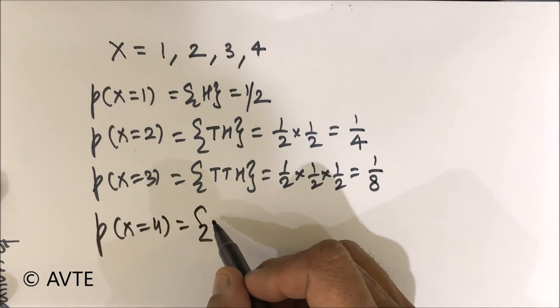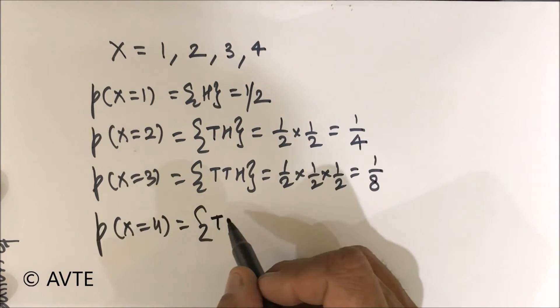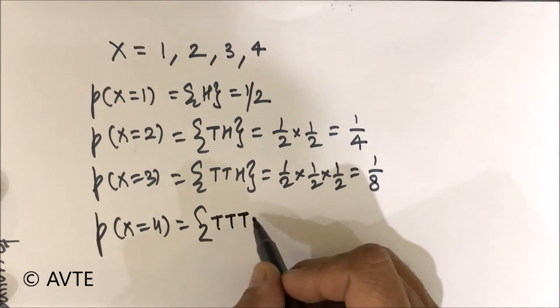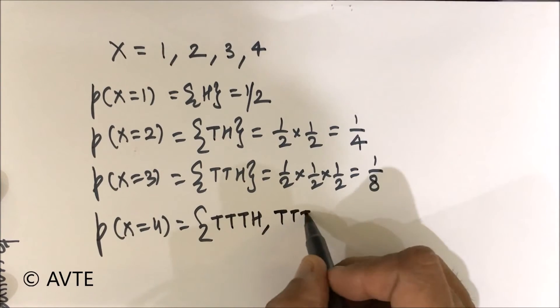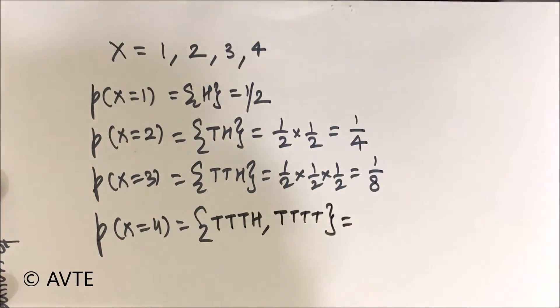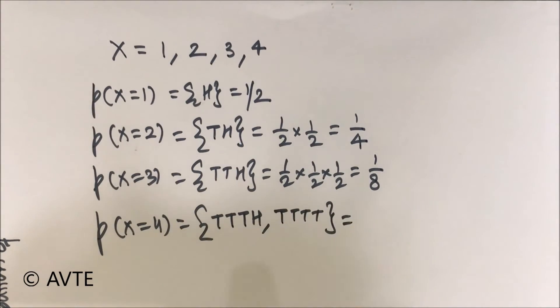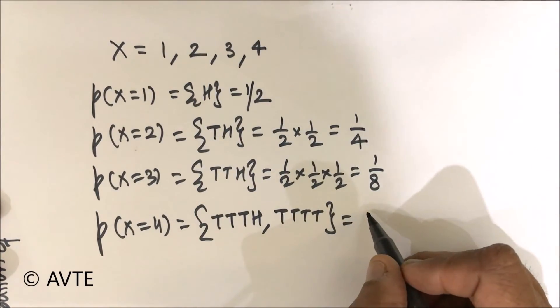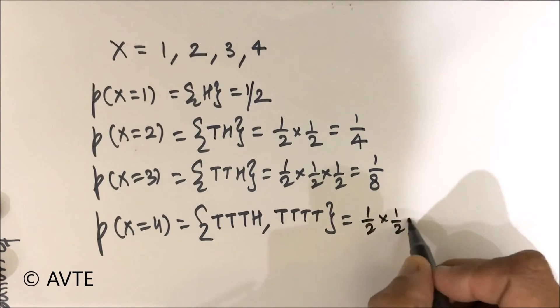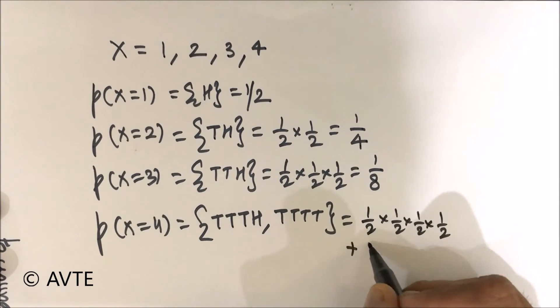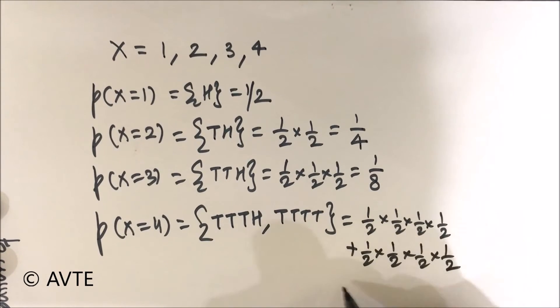So now this is a trick. When you get three tails and one heads or you get all the tails because four tails in succession. There are two cases possible here: one by two times one by two times one by two times one by two plus one by two times one by two times one by two times one by two. So two times of one upon sixteen which is one by eight.